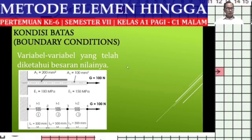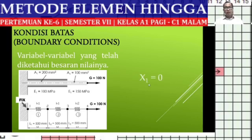In the previous example, at nodal 1, the support condition is a fixed foundation. This means no displacement occurs at nodal 1, so the value of X1 — the displacement at nodal 1 — is confirmed to be 0.